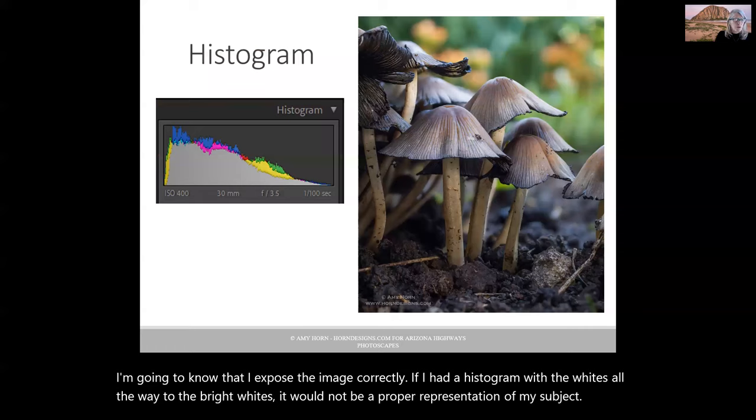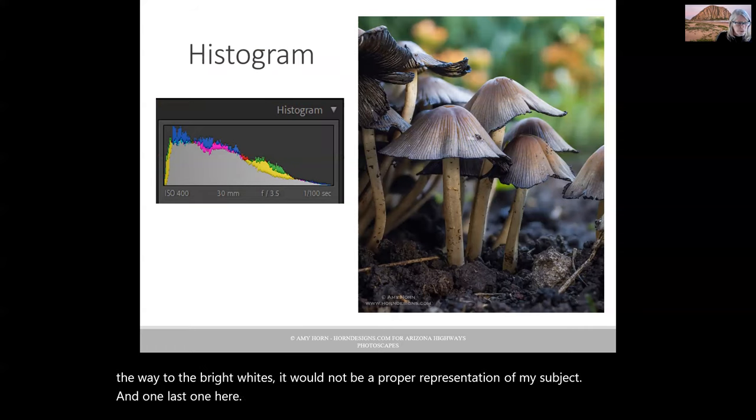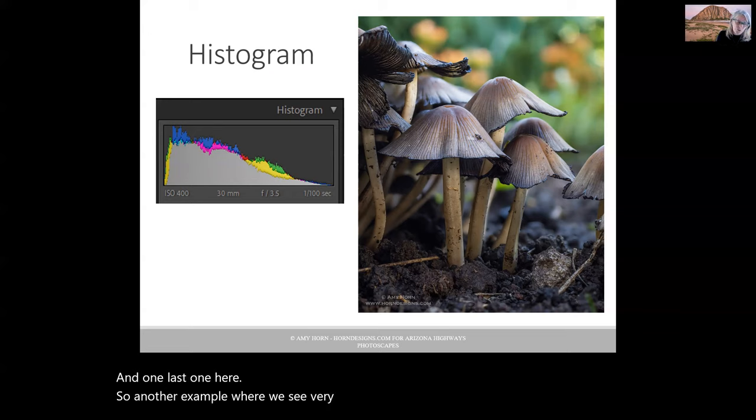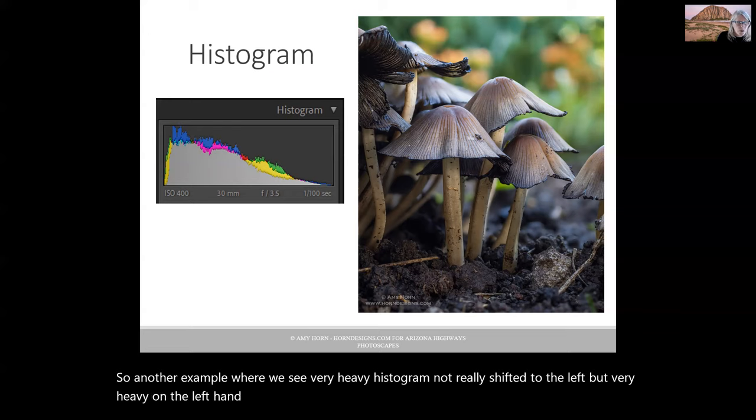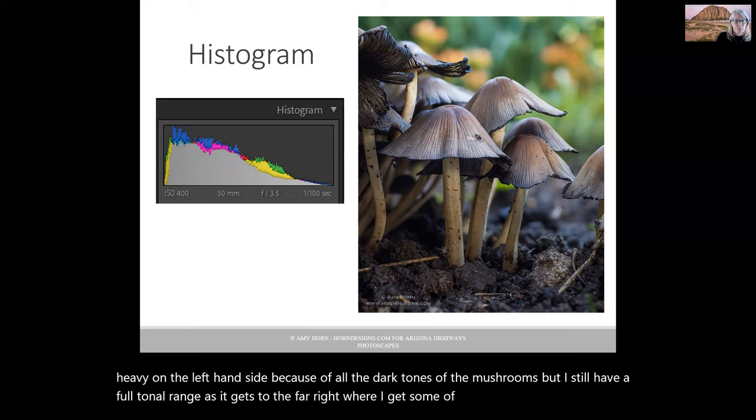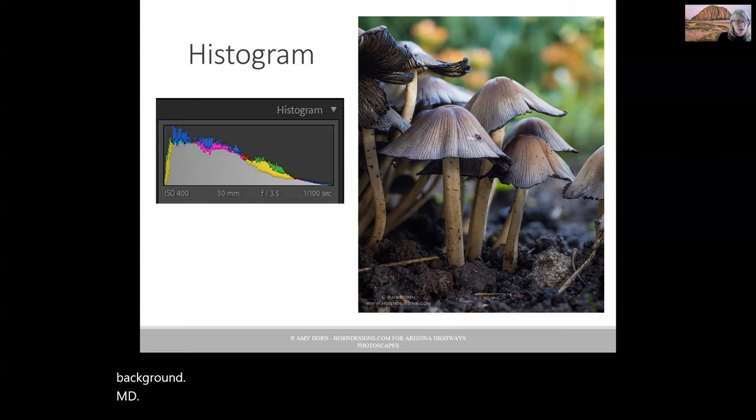And one last one here. Another example where we see very heavy histogram, not really shifted to the left, but very heavy on the left-hand side because of all the dark tones of the mushrooms. But I still have a full tonal range as it gets to the far right where I get some of the bright areas from the background and the light on the top of the mushrooms.